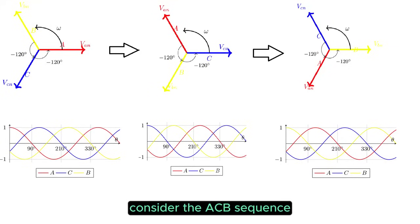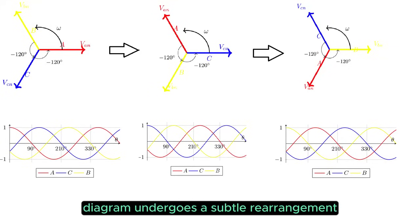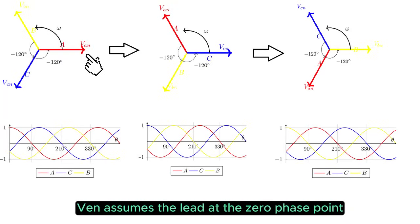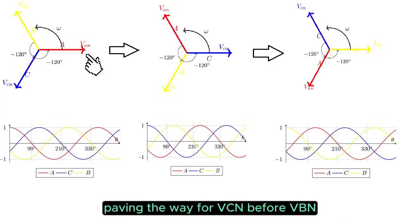Consider the ACB sequence, where the phase diagram undergoes a subtle rearrangement. In this scenario, VAN assumes the lead at the zero-phase point, paving the way for VCN before VBN.